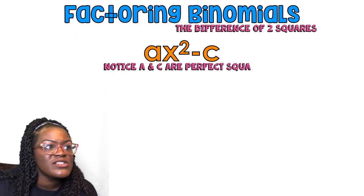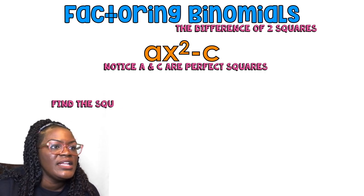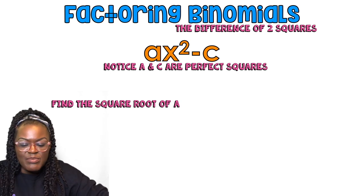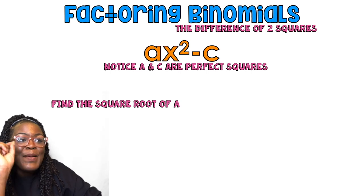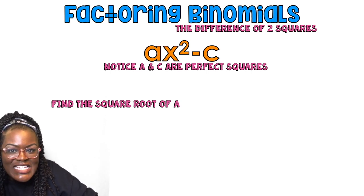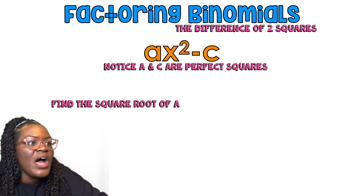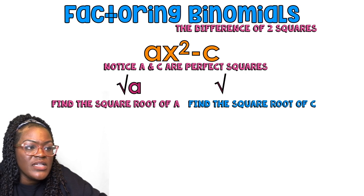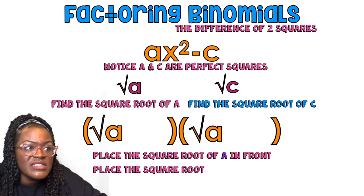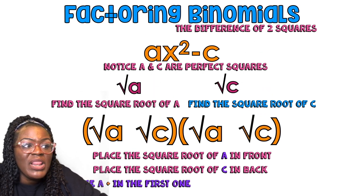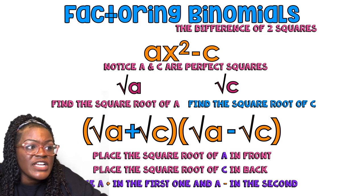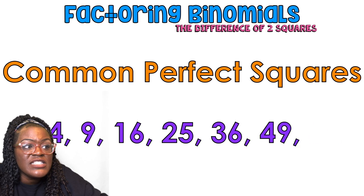If you have ax² minus c, and both a and c are perfect squares — first number is a perfect square, last number is a perfect square — and there is a minus in the middle, which is why it's called the difference, you find the square root of a and the square root of c, place them in their correct positions, and put a plus in one factor and a minus in the other.